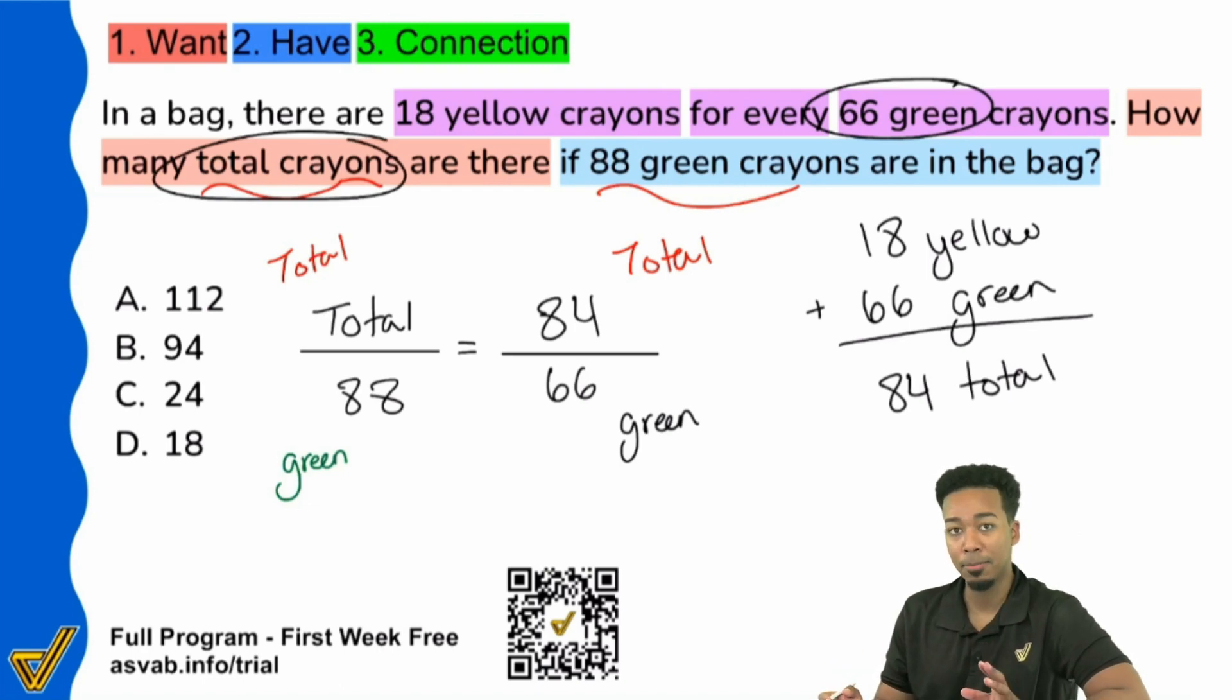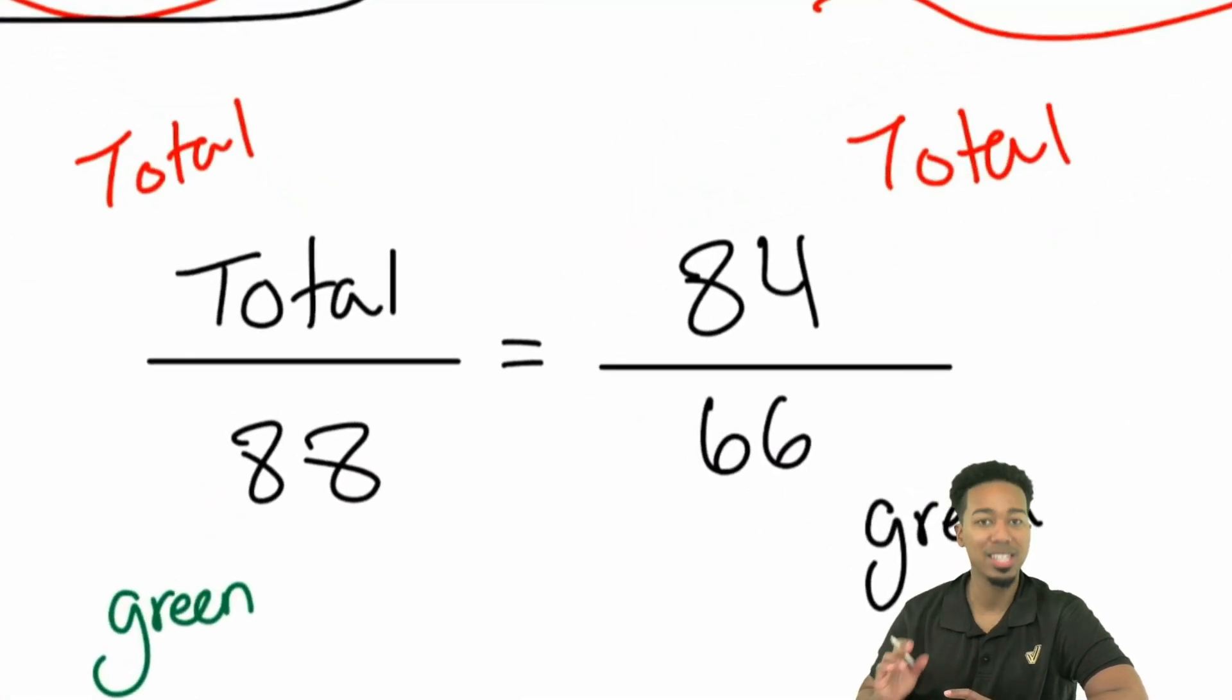Now, the biggest piece of advice I can give you when it comes to solving proportions is simply going to be this. Look for any and every way that you can to simplify the fractions or simplify the proportion before you continue. That means you can simplify the fraction like that, or you can simplify horizontally.